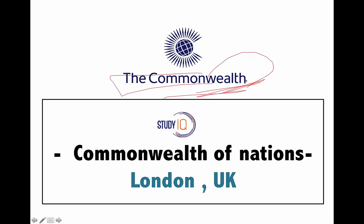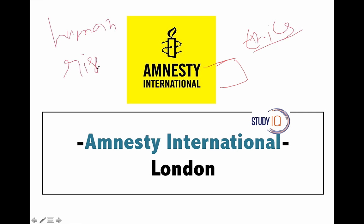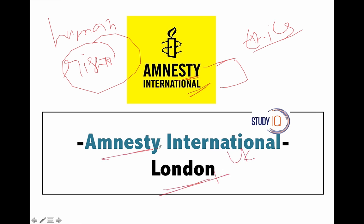Next is Amnesty International, which is focused on ethics and the protection of human rights across the world. For example, if an Indian citizen is trapped in Saudi Arabia, Amnesty International will try to give them mercy and file petitions etc. Its headquarter is in London, United Kingdom.